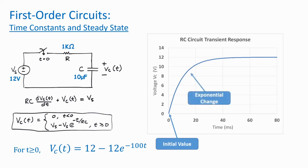Next, notice that the voltage changes exponentially — the voltage initially rises steeply and then starts to level off. Finally, notice that the voltage reaches what we'll call a final value. The voltage levels off at approximately 12 volts and remains there.